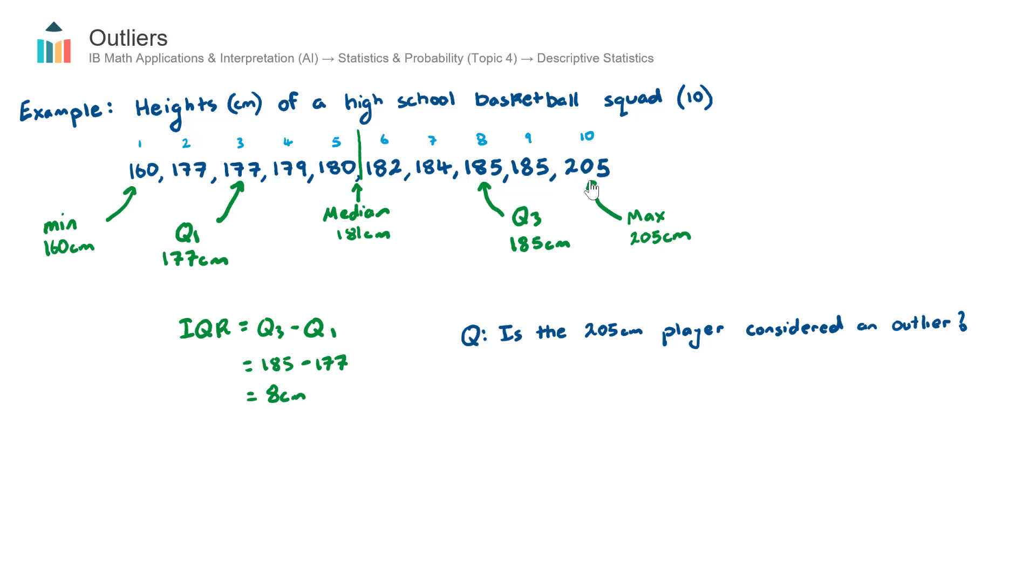The players 2 through 9 were quite similar in heights going from 177 centimeters up to 185, and then the 10th player was very tall. I actually used the word in the video this player is an outlier without actually testing it. The player does look like he's an outlier at 205 centimeters but we're not actually sure yet until we test it.